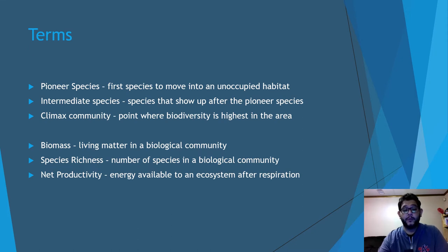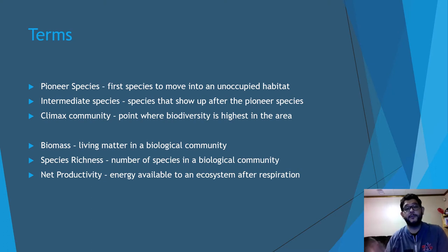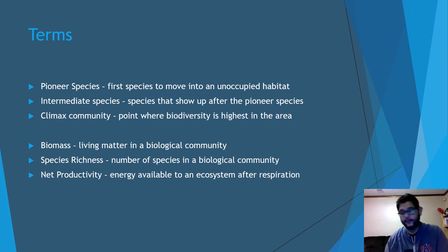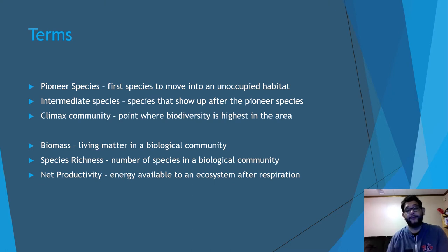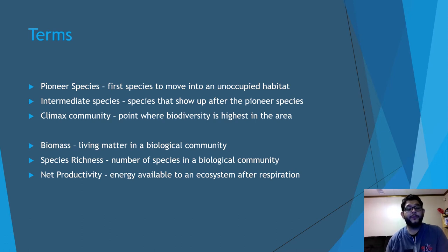Some terms to know: first, you need to know what a pioneer species is — basically the first species to move into an unoccupied habitat, typically a plant, because animals need plants to survive on some level. Then you have the intermediate species who show up right after; they help colonize and tend to be shrubs and things like that.